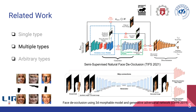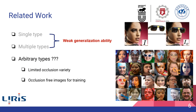Some others can deal with more occlusion types, such as cups, microphones, hands, etc. Existing methods share the same strategy: they synthesize training data by overlapping the occlusion on a face image, and then train the model to recover the occluded texture. Unfortunately, there doesn't exist a method that can remove arbitrary types of occlusion.